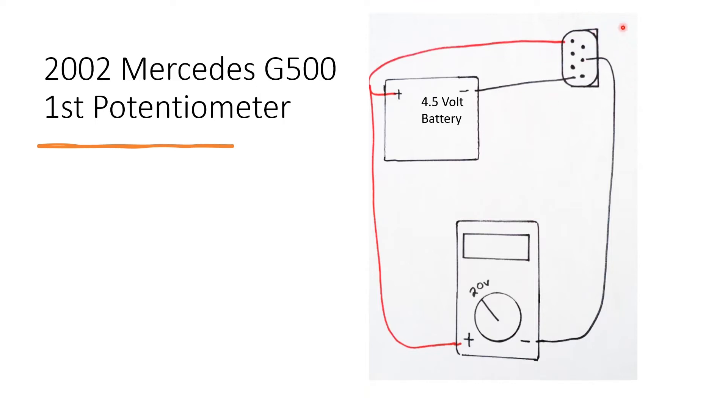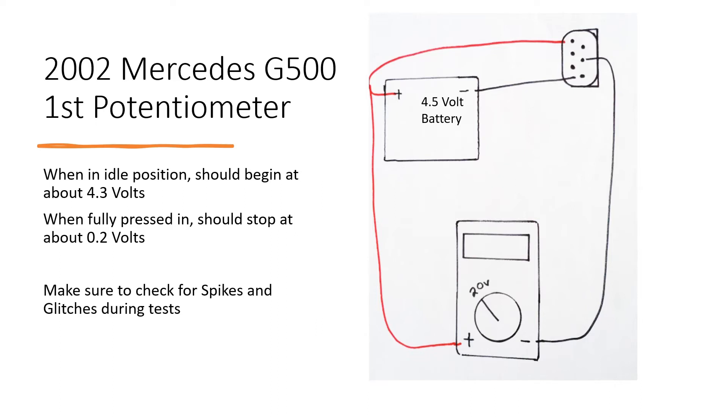The plug should be facing towards you sort of like this. After doing that it should be reading about 4.3 volts in its idle position and as you press the sensor in it should read about 0.2 volts at the very final point. You are also checking for both spikes and glitches during these tests.